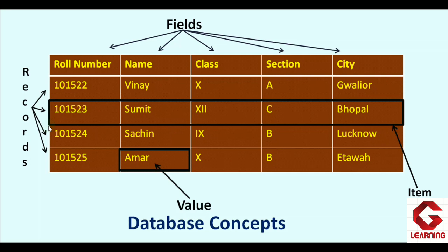This table contains details of four different items, with four records. To summarize: in RDBMS, the table is called a relation; columns are called fields and attributes; rows are called records or tuples; whatever is entered inside the cell is called a value; and the complete detail that a particular record contains is called an item. These are the terms covered in session 1 of unit 3. Two more terms — primary key — will be explained in the next video.